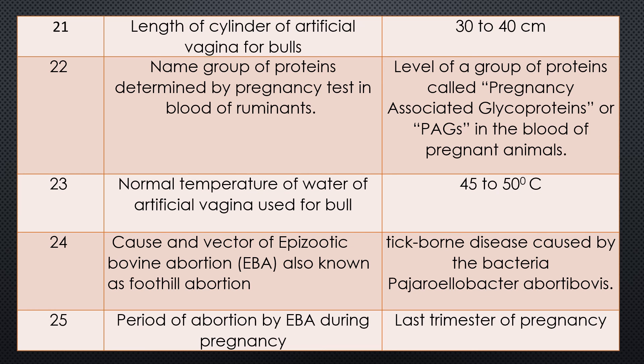Last question, Question 25. Period of abortion by EBA during pregnancy — which period: first trimester, second trimester, or last trimester? The answer is EBA causes abortion during the last trimester of pregnancy. It is similar to brucellosis, but brucellosis is a very common disease while EBA is a very rare disease.